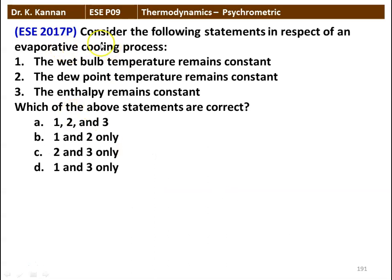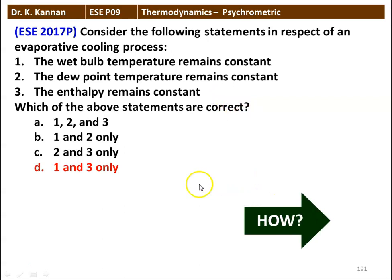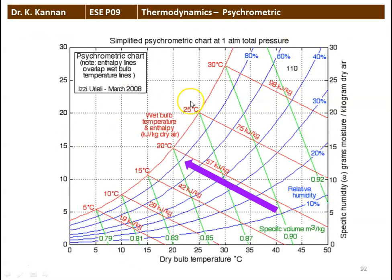Next question: consider the following statements for an evaporative cooling process. Statement 1: wet bulb temperature remains constant. Statement 2: dew point temperature remains constant. Statement 3: enthalpy remains constant. The correct answer is 1 and 3. In the psychrometric chart, evaporative cooling is shown by the pink color line, along which enthalpy and wet bulb temperature remain constant. The red color line represents enthalpy, and the curved line with temperature markings represents wet bulb temperature.